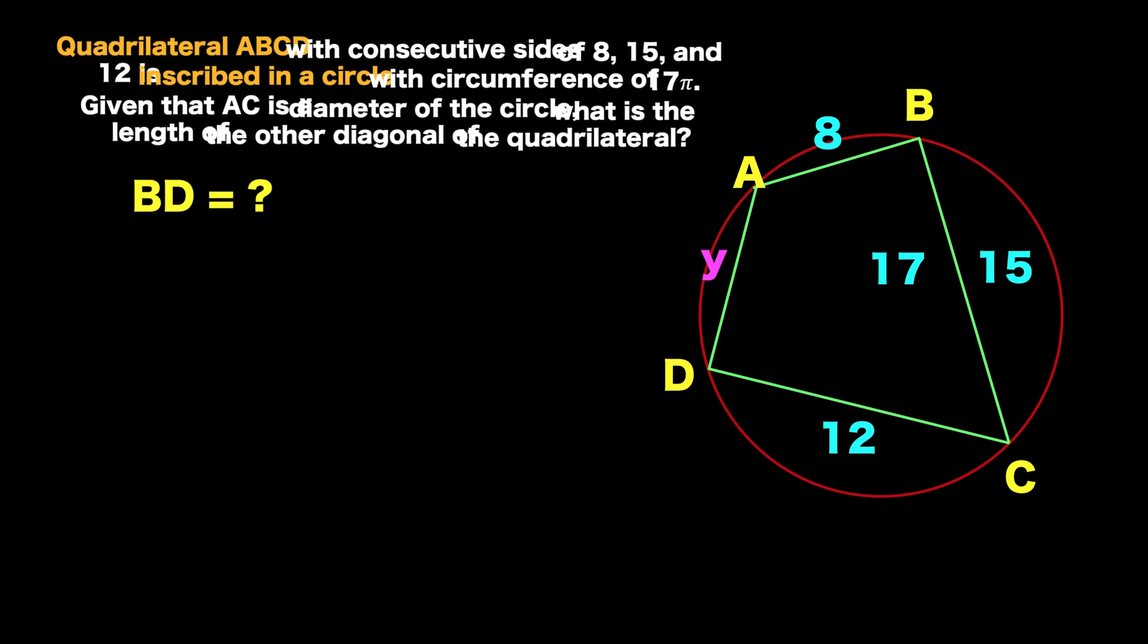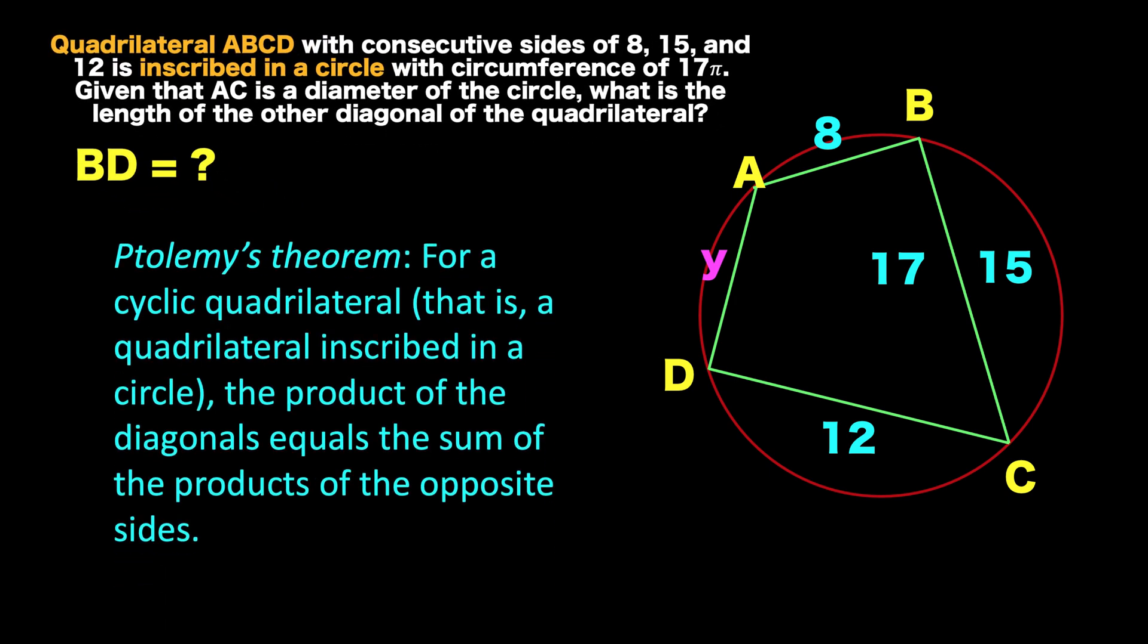Now, let's solve this problem together by first recalling what is Ptolemy's Theorem. The theorem says that for a cyclic quadrilateral, that is a quadrilateral inscribed in a circle, the product of the diagonals, here the diagonals are AC and BD.